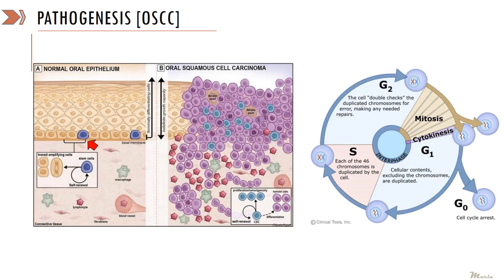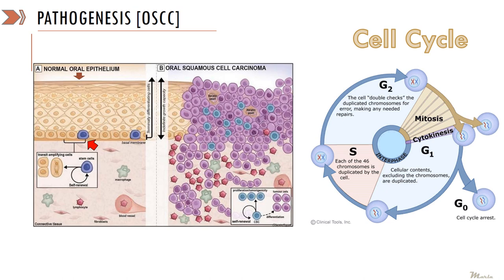In normal oral epithelium, upon cell division one cell continues within the basal cell layer and the other cell migrates superficially undergoing maturation. This process is conducted by the cell cycle, wherein the cell undergoes division followed by maturation. Under normal circumstances, various factors keep the process of cell division in check such that only an optimum number of cells are present within the oral mucosa. However, exposure to various carcinogens results in genetic damage to oral keratinocytes, disturbing and dysregulating the process of cell division, resulting in excessive uncoordinated proliferation and invasion into the underlying connective tissue, which results in malignancy.